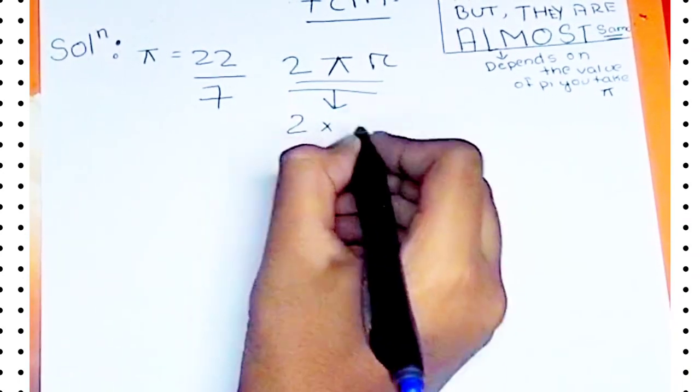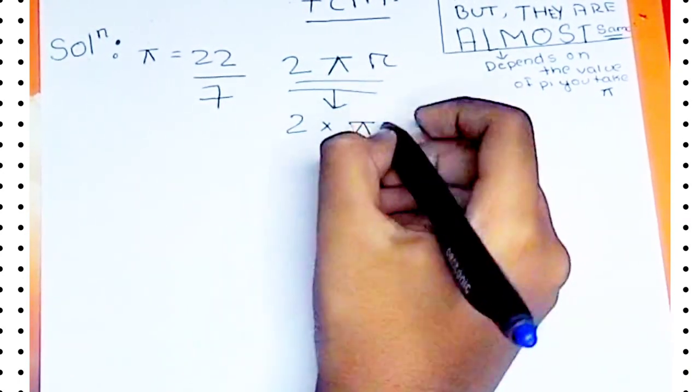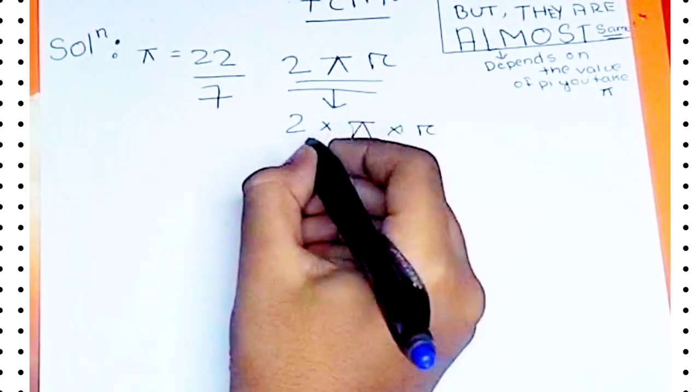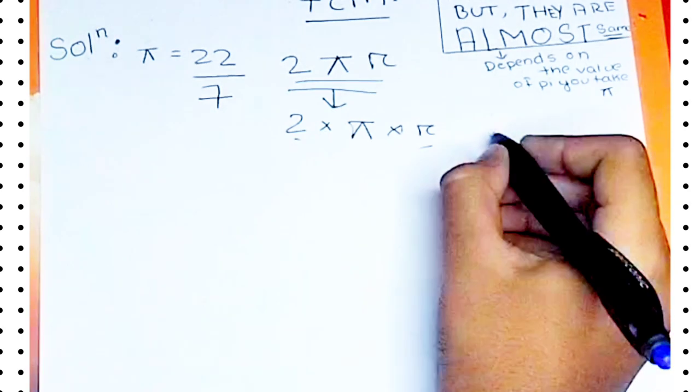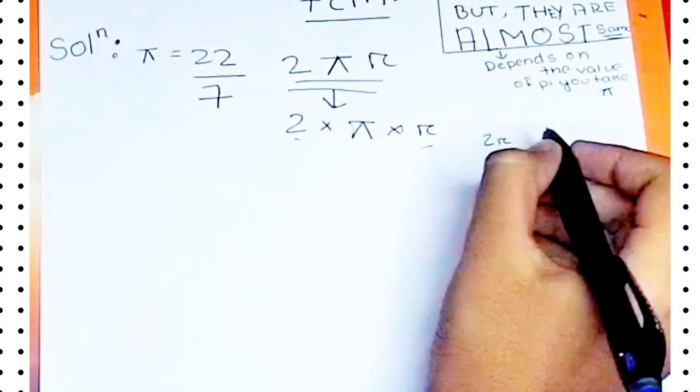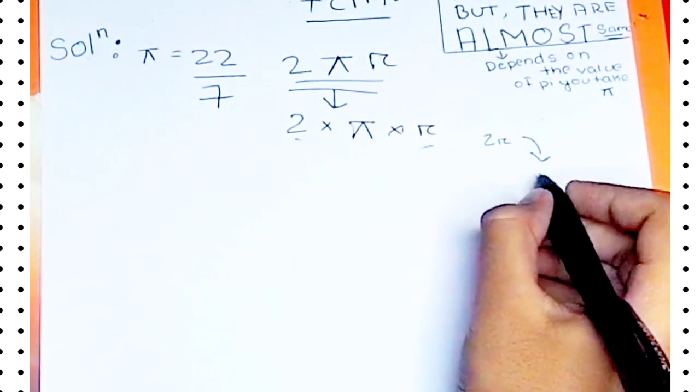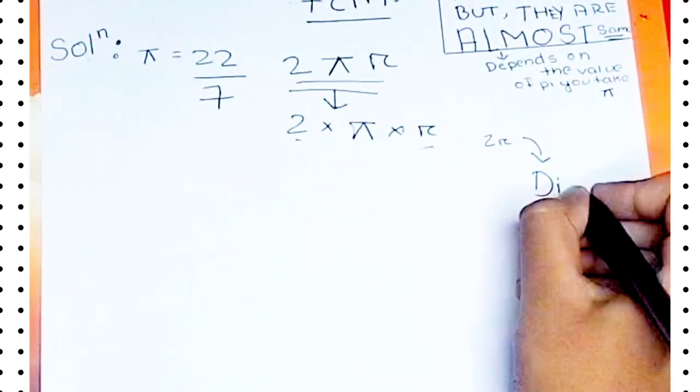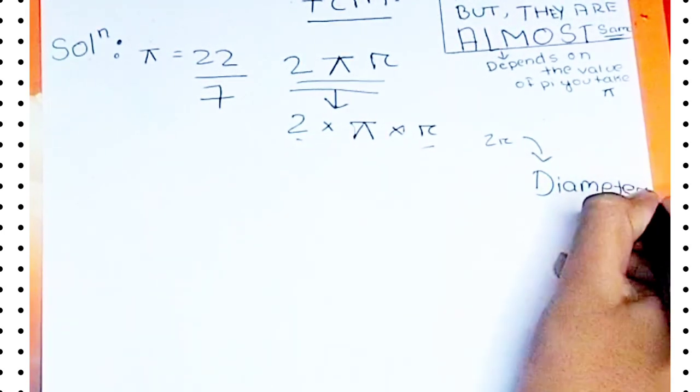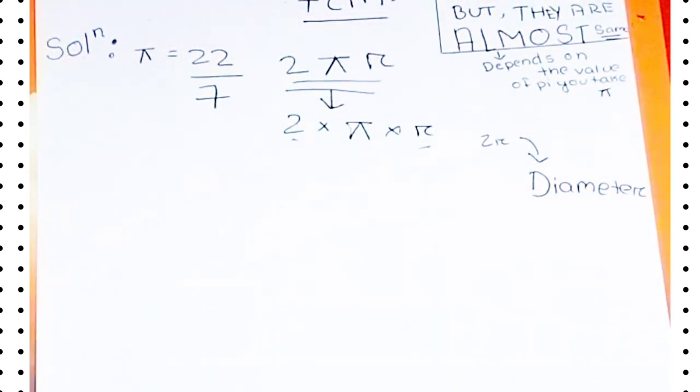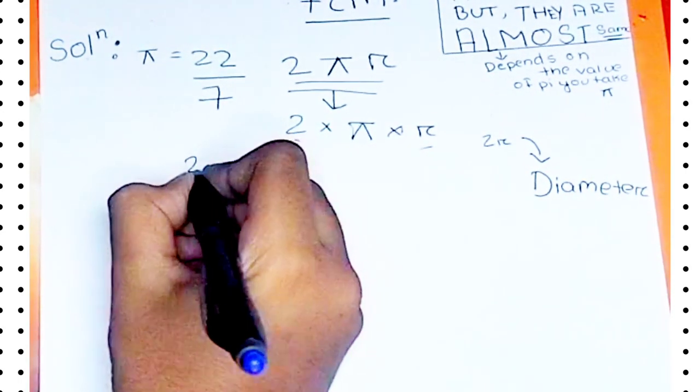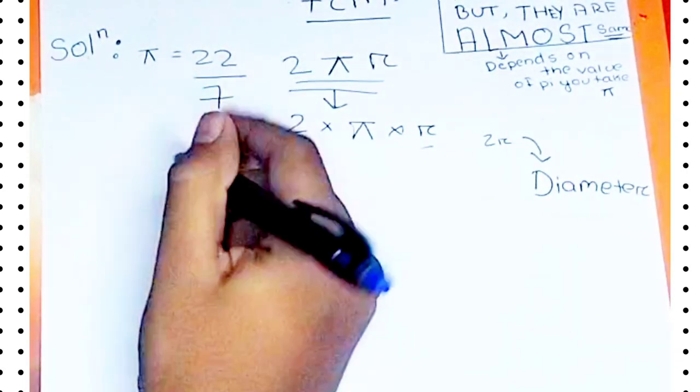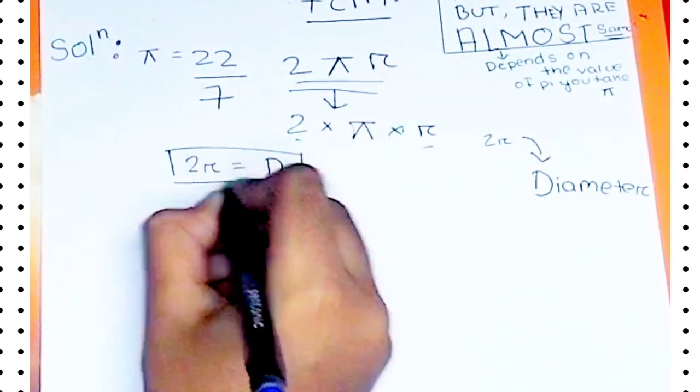This is written like that because that means 2 multiplied by the value of pi multiplied by r. So that means 2 multiplied by r, which is 2r. And 2r we all know means d, which means diameter. So 2 radius will give diameter. I hope you have the basic idea. So that means 2r is equal to d.